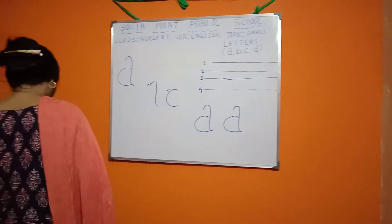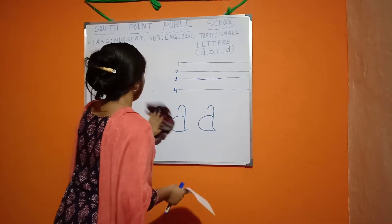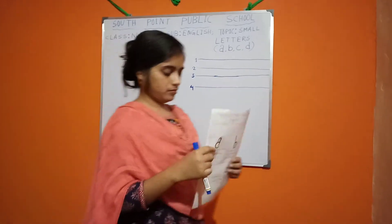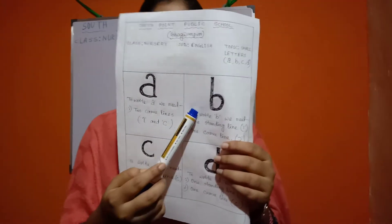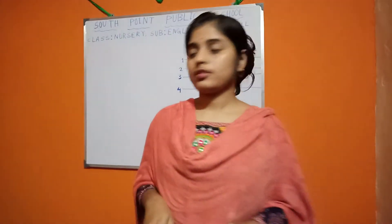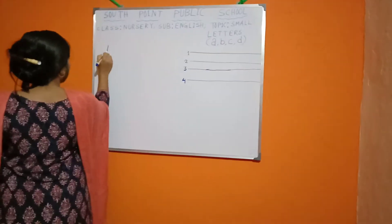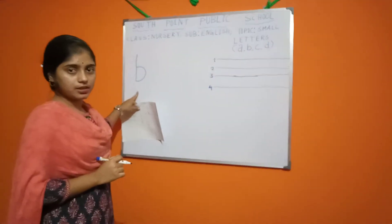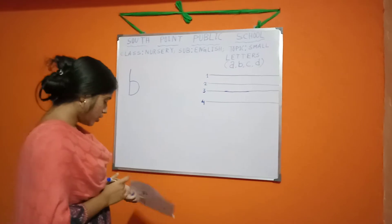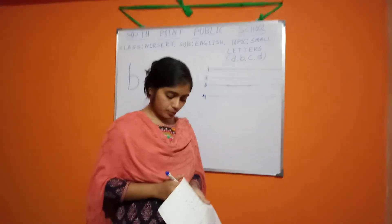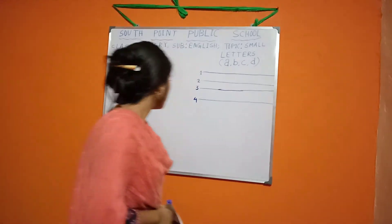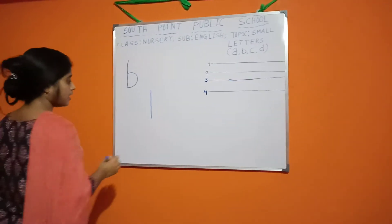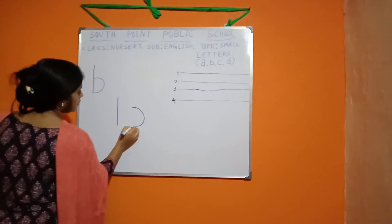Next, B. This is B. Look at the board. This is B. To write B, we need one standing line and one curved line. To write B, we need one standing line and one curved line.